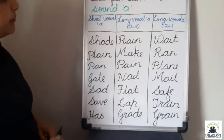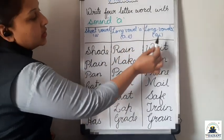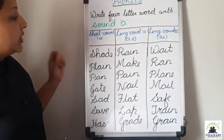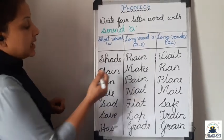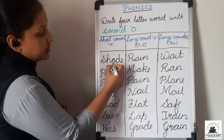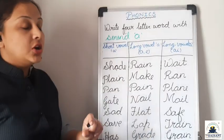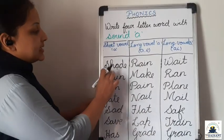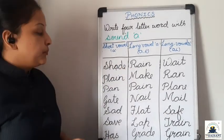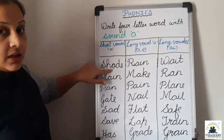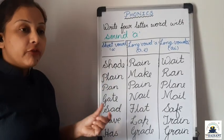Short vowel A, long vowel A, and another long vowel A. Here you have to pronounce the word with the short sound of A. Means S, H, A, D, E — Shade. The sound of A you have to take in a short way.